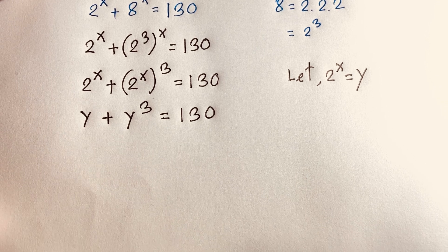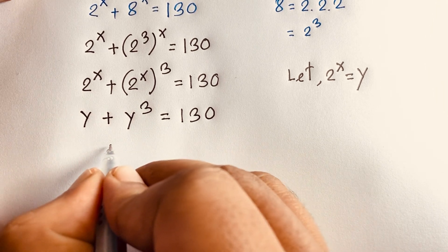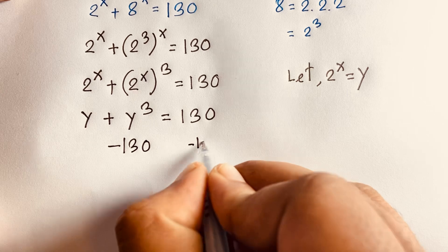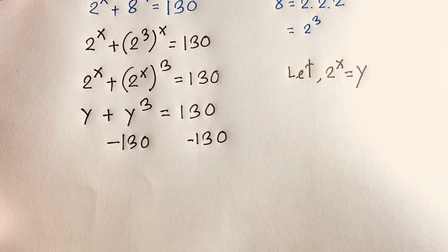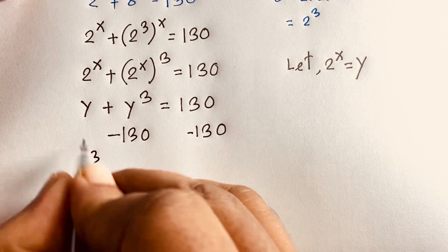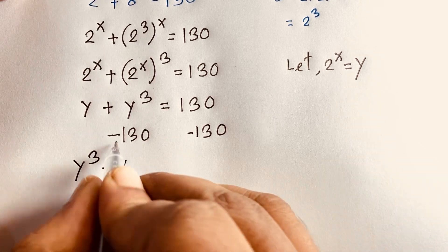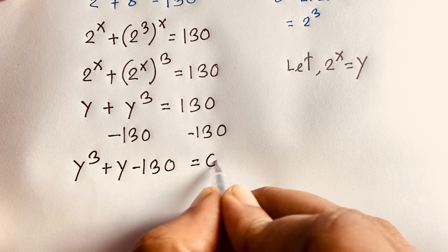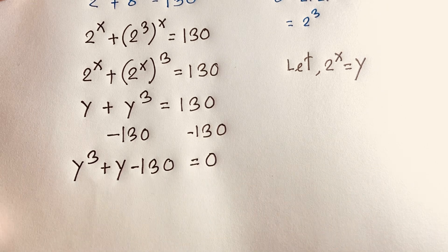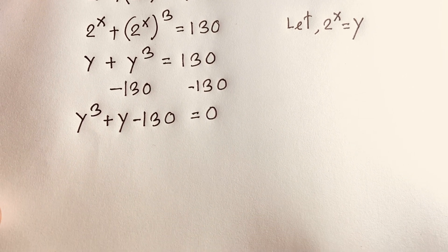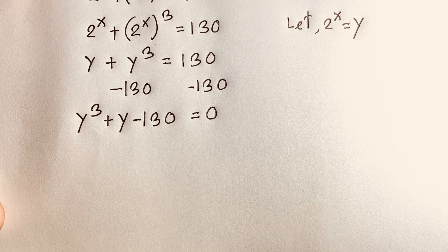So I consider it will be y plus y to the power 3 is equal to 130. Then I subtract 130 from both sides. Now I consider this equation: it will be y to the power 3 plus y minus 130 equals 0. So we find out here is a nice cubic equation: y³ + y − 130 = 0.